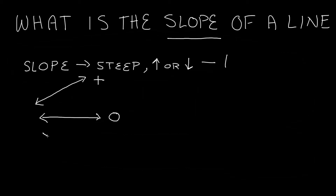If we have a line that decreases as it goes to the right — something that kind of looks like this — this slope is going to be negative. We'll have some negative number representing a line that decreases as it goes to the right. What about a line that's straight up and down — vertical? That is going to have an undefined slope.